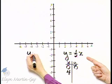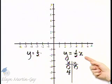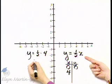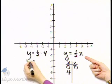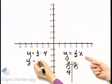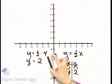Then y equals one-half times—remember we replace x with four. So y equals one-half times four, that's four over two, or two. So when x is four, y is two. That's another ordered pair solution.